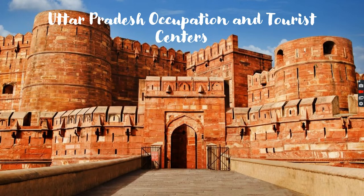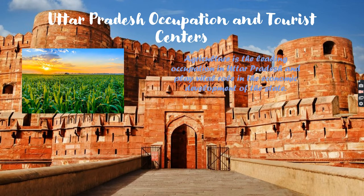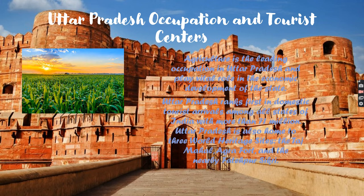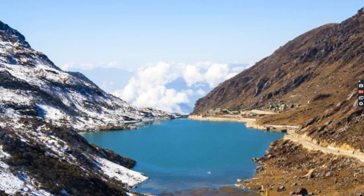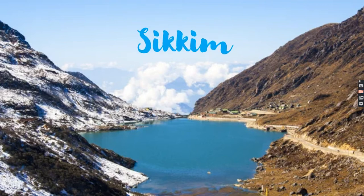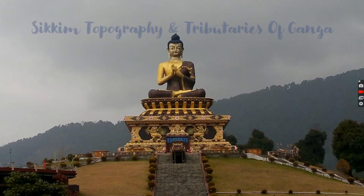Uttar Pradesh occupation and tourist centers: agriculture is the leading occupation in Uttar Pradesh and plays a vital role in the economic development of the state. Uttar Pradesh ranks first in domestic tourist arrivals among all states of India with more than 71 million visitors. Uttar Pradesh is also home to three World Heritage Sites: the Taj Mahal, Agra Fort, and nearby Fatehpur Sikri.